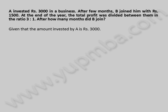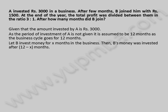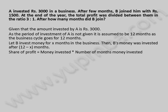Given that the amount invested by A is 3,000 rupees. As the period of investment of A is not given, it is assumed to be 12 months as the business cycle goes for 12 months. Let B invest money for X months in the business. Then B's money was invested after 12 minus X months. Share of profit is equal to money invested multiplied by number of months invested. A's share of profit is equal to 3,000 into 12. B's share of profit is equal to 1,500 into X.